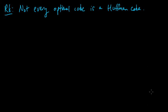We have proved that every Huffman code is optimal, but the converse is not true — not every optimal code is a Huffman code. One example would be to construct a uniquely decodable code that is optimal but not Huffman. In fact, it's also true that not every optimal prefix code is a Huffman code, which is an even stronger statement.